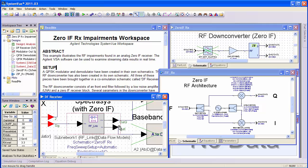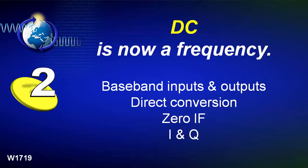Since these are baseband IQ outputs, that brings up benefit number two: DC is now a valid carrier frequency for Spectrasys. The RF link capability allows baseband inputs and outputs. This allows you to look at architectures with direct conversion and zero IF and produce baseband IQ outputs.